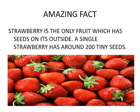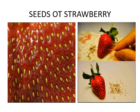Now an amazing fact — you have seen that all the seeds are inside the fruit or vegetable, but strawberry is the only fruit which has seeds on its outside. A single strawberry has around 200 seeds on its outside. You can see in this picture the yellow color seeds on the outside. You can take out these seeds and use them to grow a new plant of strawberry.